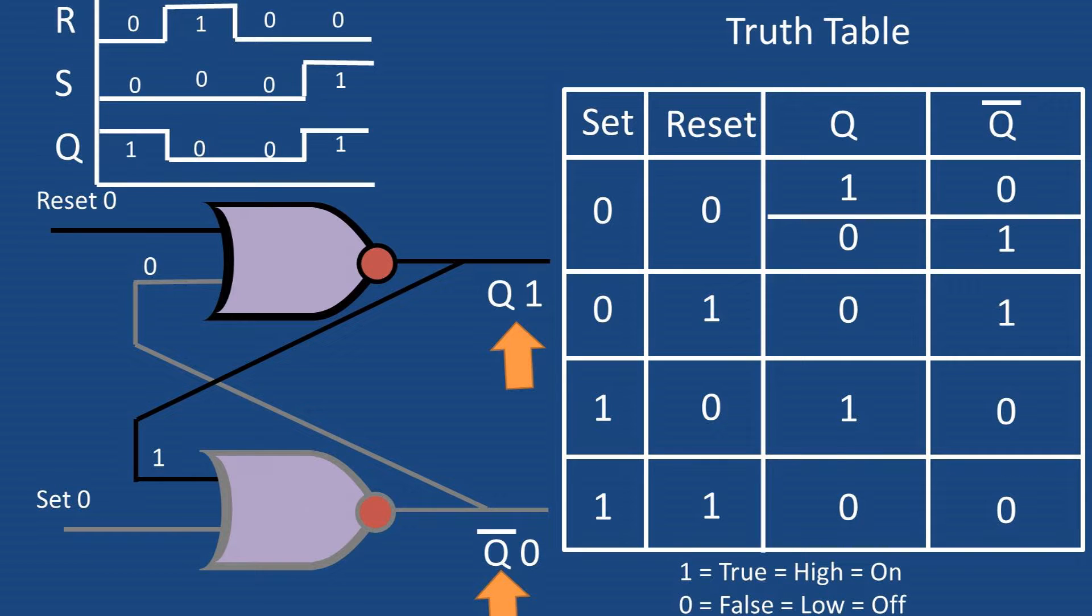On this active set-reset latch we have a Q and a NOT Q designated with a line over top. Recall that these values in logic should always be opposite of one another, so if Q equals one then NOT Q equals zero and vice versa. To the right I have a truth table that we will be walking through all possibilities of inputs. At the top I have a waveform that depicts each stage of the truth table.